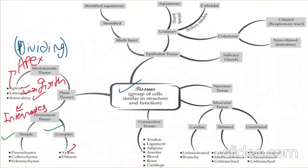Complex permanent tissues: Xylem conducts water and minerals. Phloem conducts the food prepared by the leaves. Xylem has four components: tracheids, vessels, xylem fibers, and xylem parenchyma. Phloem has: sieve tubes, companion cells, phloem parenchyma, and phloem fibers.